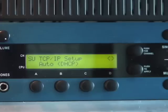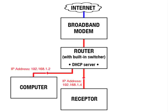Double press your Receptor's power button to shut it down and shut down your computer as well. Make sure your router and switcher are on, and then turn on your computer and Receptor. Once both your computer and Receptor have rebooted, your router will have provided a unique IP address to both of them, meaning they can now talk to each other.